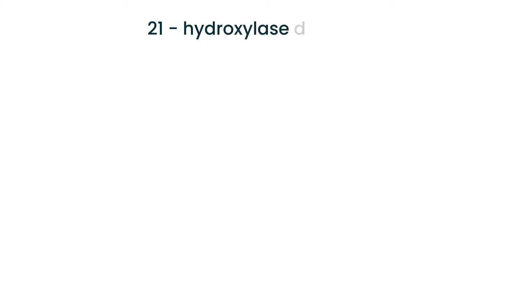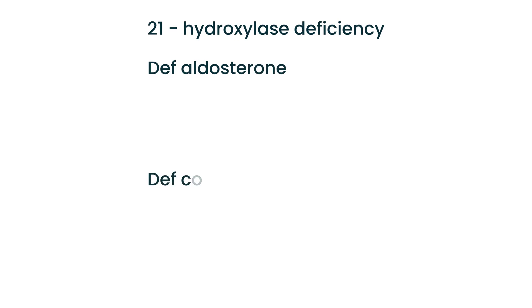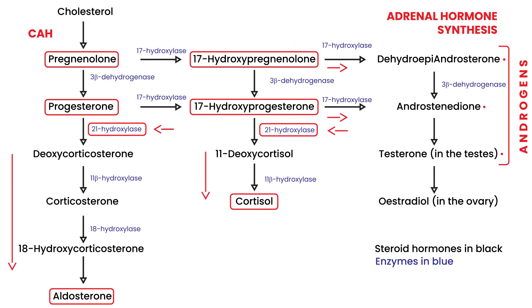If you have 21-hydroxylase deficiency, you will not be able to produce aldosterone and you will also have a deficiency of cortisol. Looking at the diagram again, if 21-hydroxylase is deficient, you will not progress in these pathways — you won't get cortisol and you won't get aldosterone. That enzyme is critical.